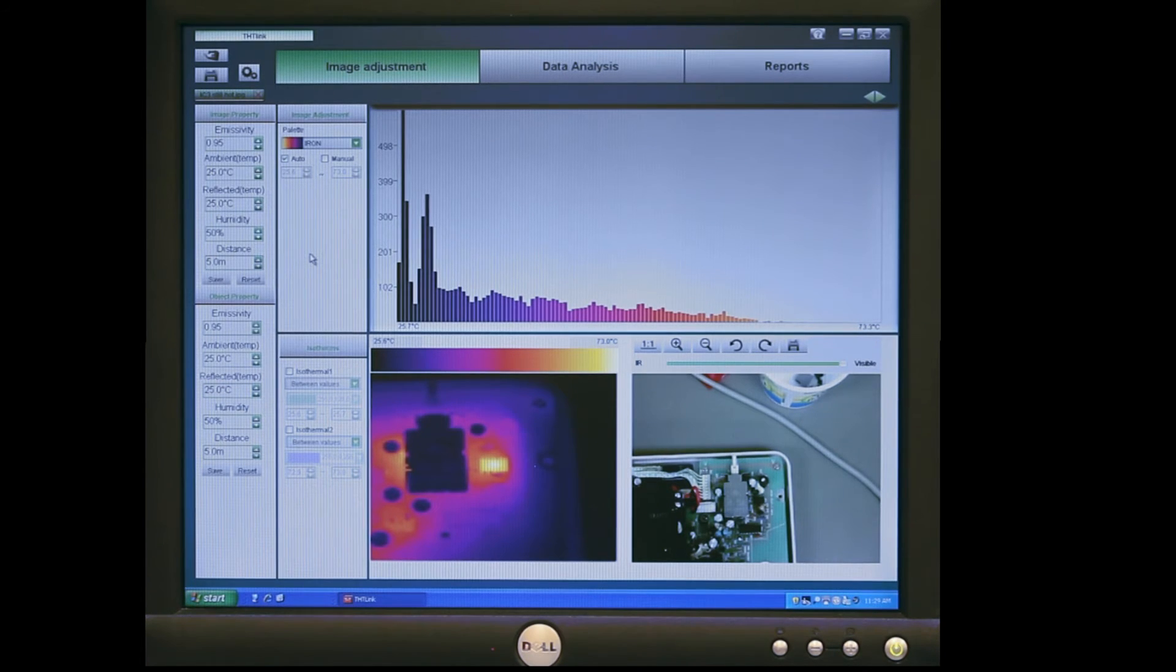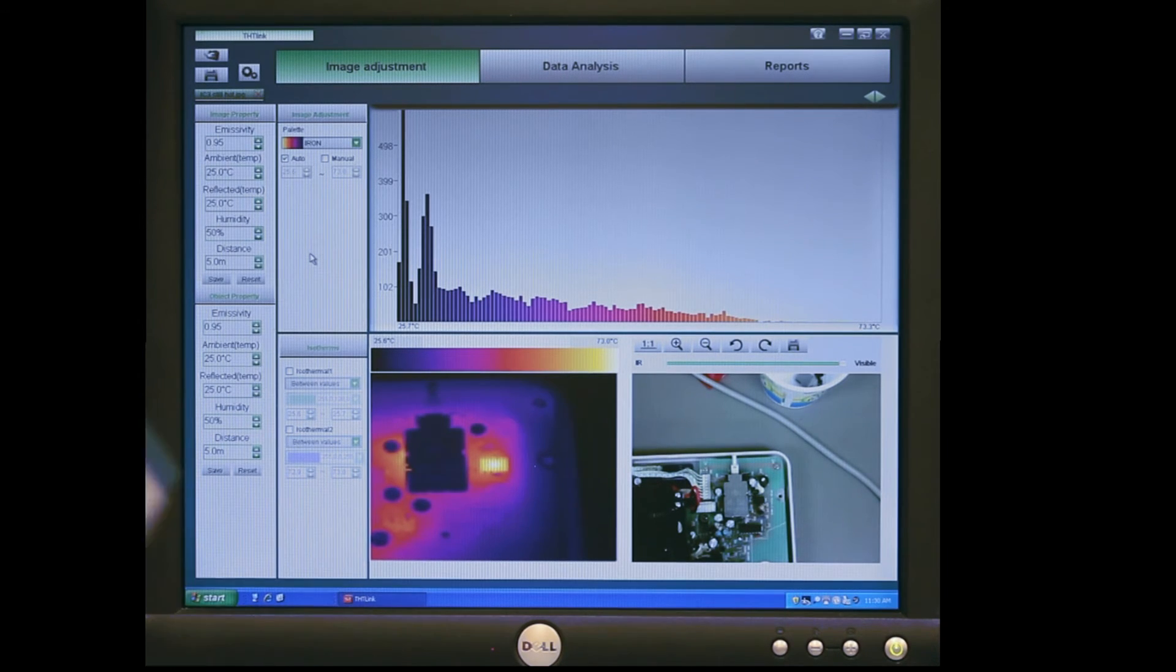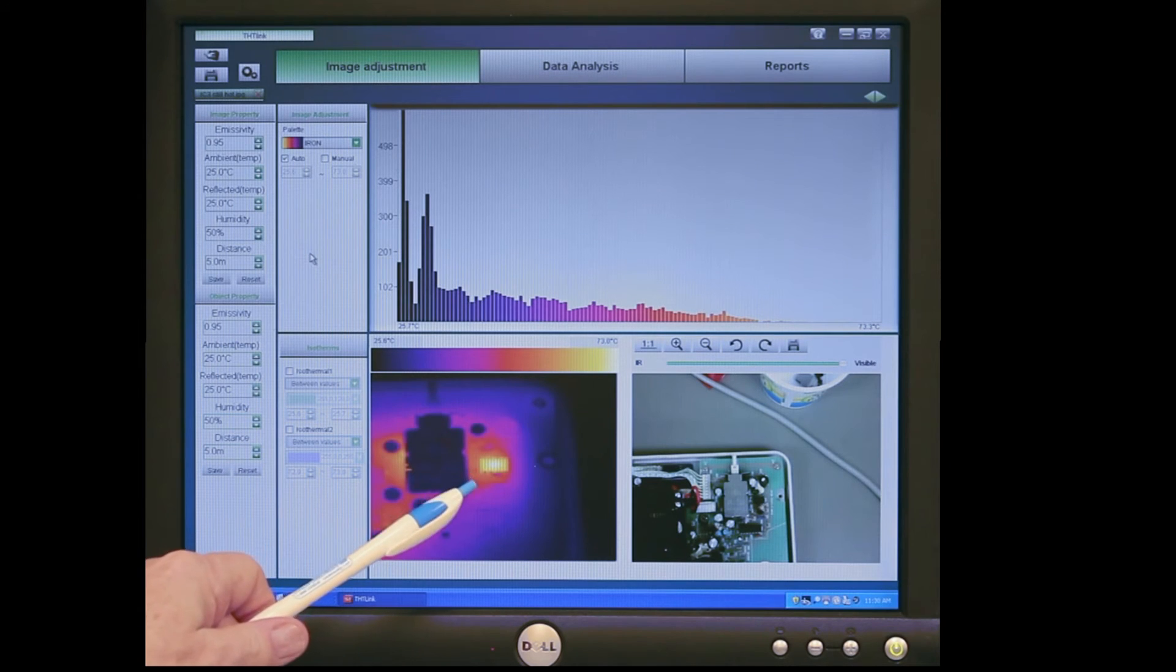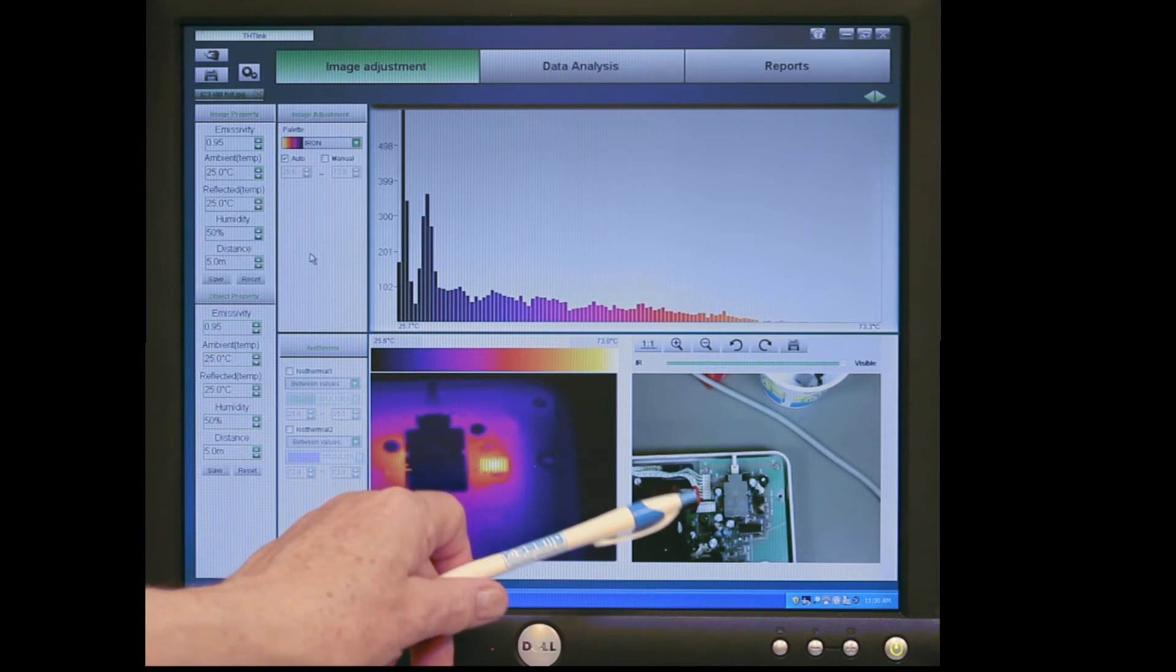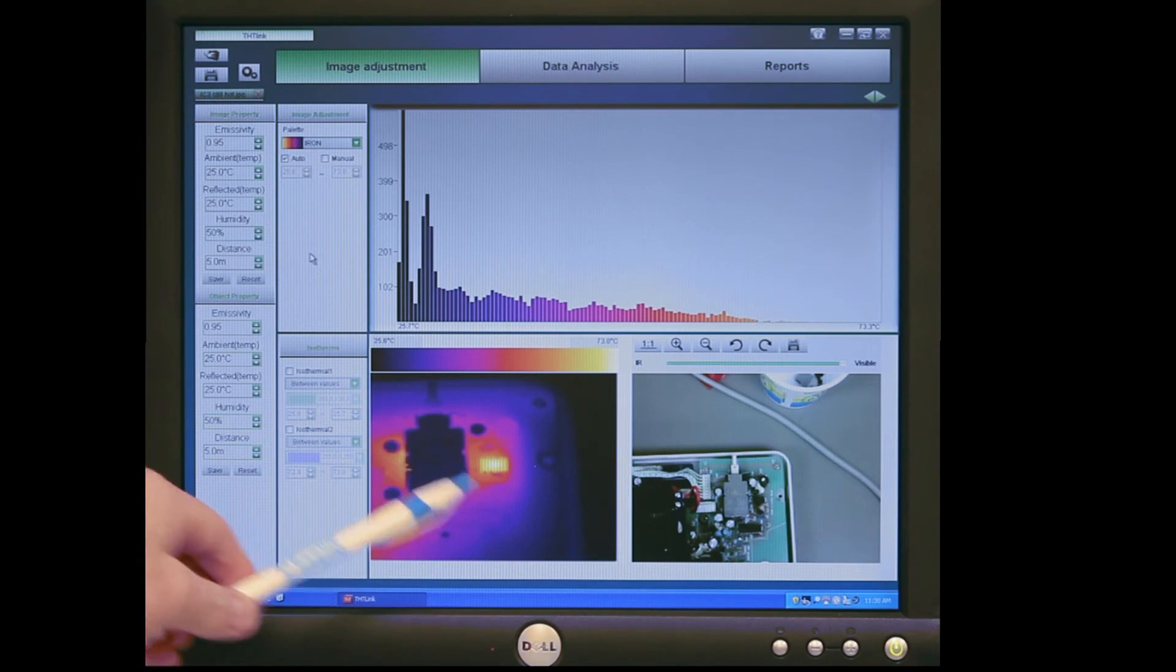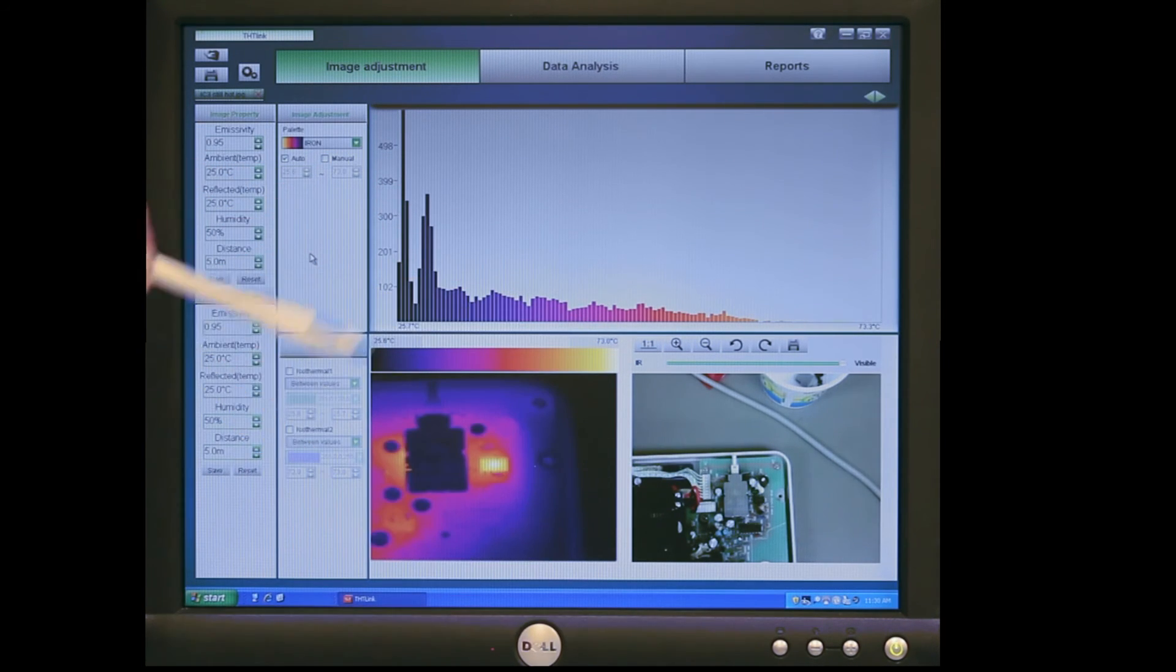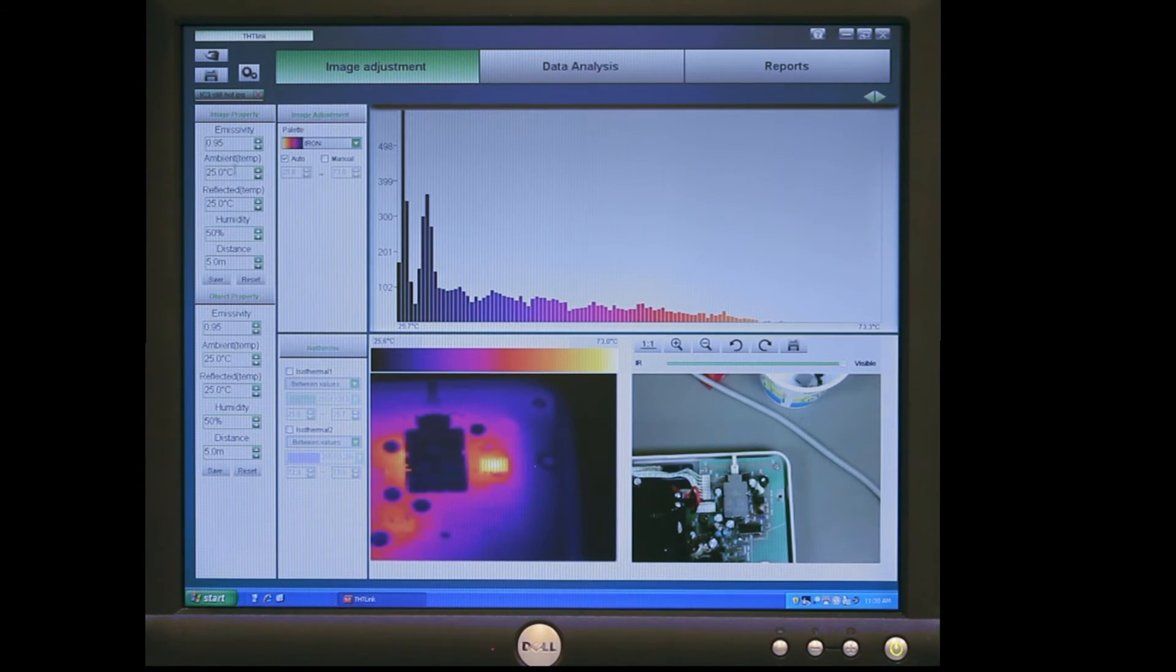So here's a shot of that same integrated circuit that I had taken earlier and uploaded. When you upload the image you get it here in this panel, but you also got a regular visible light picture of the same thing over here so at least you know what you're looking at. Of course this is the power switch here which corresponds to this thing here. And here's a thermal profile of the entire picture right there. And over on the left there's all different kinds of other image property data that got uploaded from the camera along with the picture.